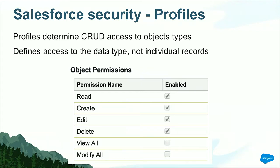Every user has a profile, and that profile determines that user's CRUD access to objects. CRUD is an acronym you'll see throughout the Salesforce documentation — it stands for create, read, update, and delete. For each object, you can define whether a profile has the ability to perform each of those operations on that object. We're talking about object types, not individual records — we'll get to that in a few moments.